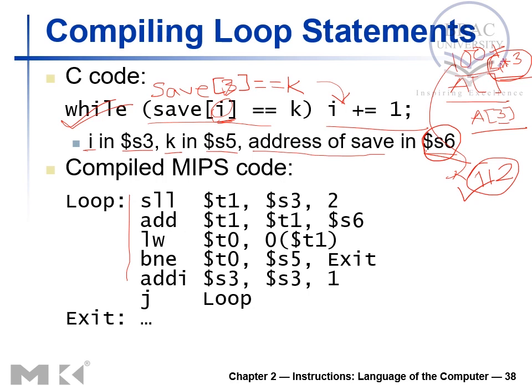Our job is to multiply the index by 4. Since this is a variable, we cannot use a direct integer multiplication. Instead, we use SLL — shift left logical. Register s3 holds i, so if we shift s3 left by 2 bits, that multiplies i by 4 (since left shift by 2 equals multiplying by 4). We keep the result in t1.